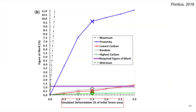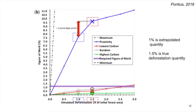In the zoomed version, the simulated quantity of deforestation is on the x-axis and the FOM is on the y-axis. The main point is that deforestation risk maps have various FOMs depending on the simulated deforestation quantity. For the proximity allocation model, the 1% extrapolated quantity FOM is approximately two percentage points lower than the FOM at the 1.5% true deforestation simulated quantity, demonstrating how the FOM can change based on the simulated quantity.